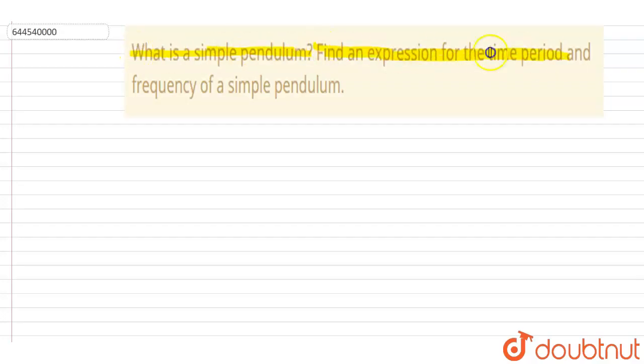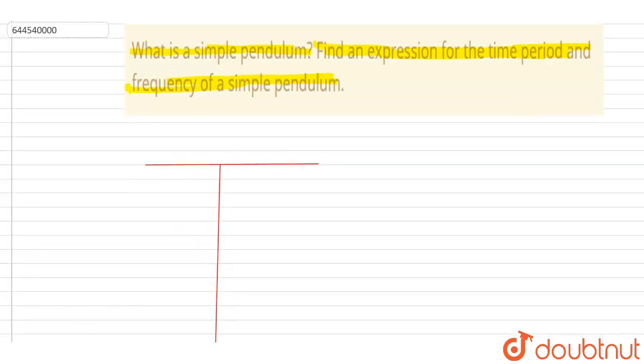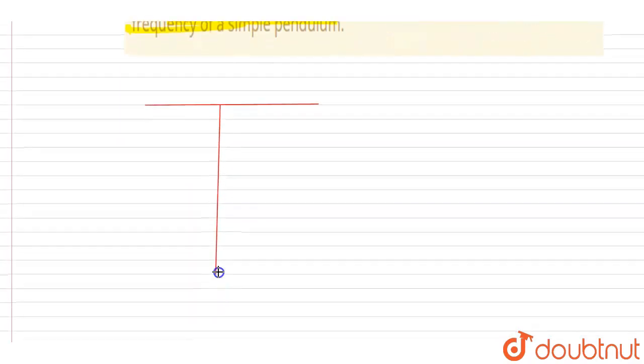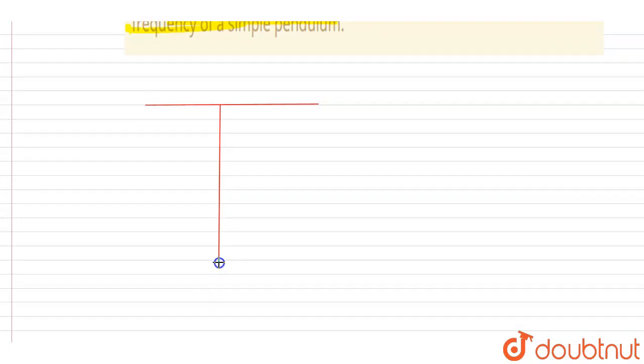What is the simple pendulum? Find the expression for the time period and frequency of simple pendulum. So if I draw a pendulum like this, if you see initially it was like this and now what happened here, it is slightly displaced by an angle theta.